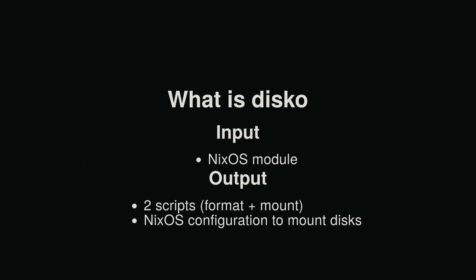So I'm going to talk about Disco briefly. What is Disco? Basically it's a NixOS module which takes a configuration with some strings and outputs two scripts: one to format your disks, and one to mount them. It also outputs some NixOS configuration to configure the file systems so your system actually boots, and also the rates. It uses some module magic, like eval modules — best feature of NixOS.